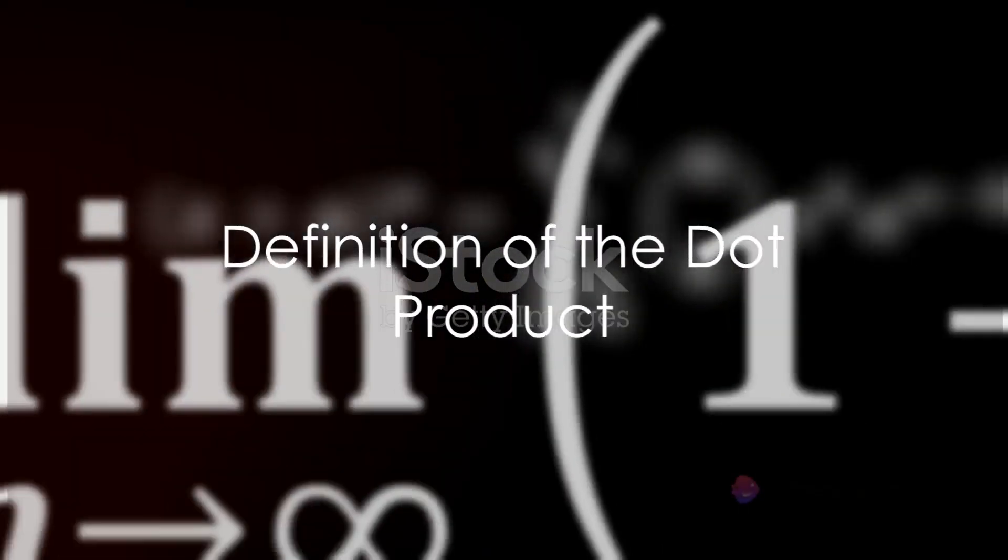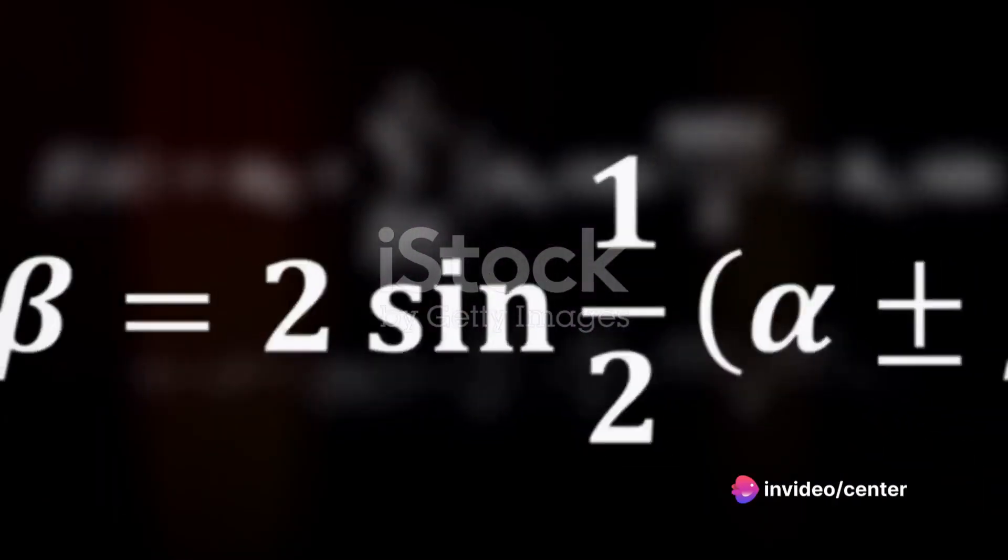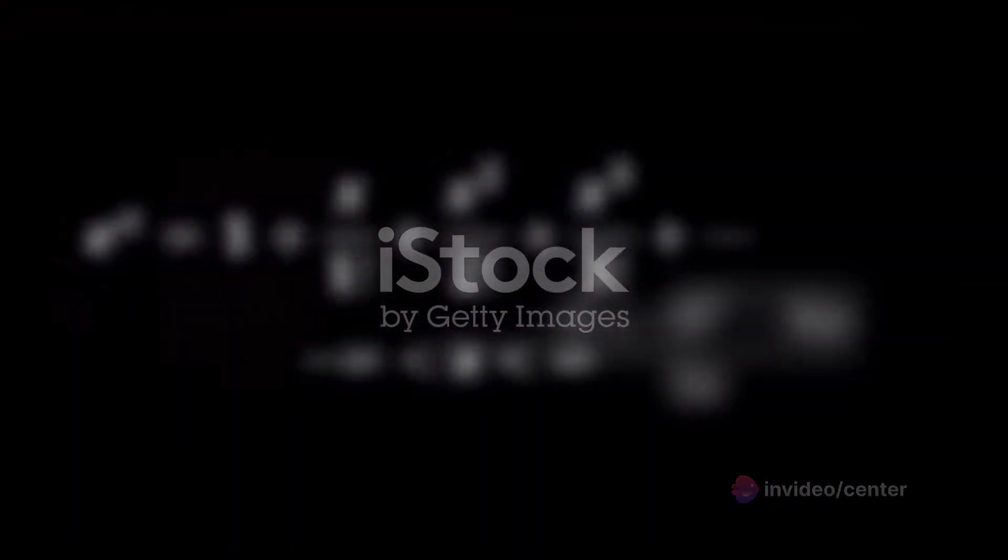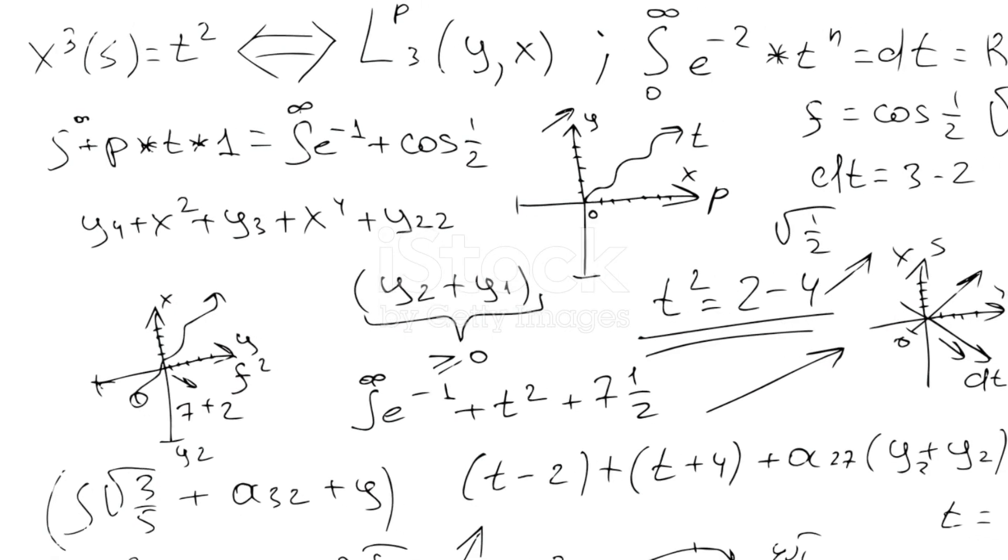Imagine two vectors. Let's call them A and B. The dot product, also known as the scalar product, is an operation that takes these two equal length sequences of numbers and returns a single number.